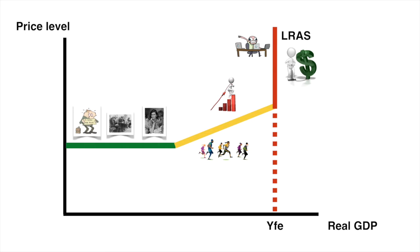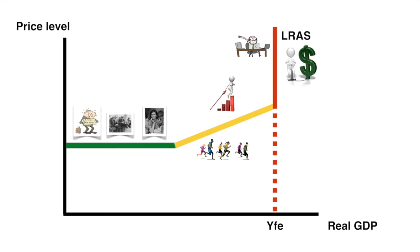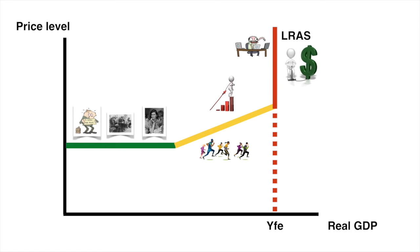As it stands, YFE is our potential output. The current economy is not capable of producing more output beyond this point. However, there are certain factors that could cause it to shift outwards. The LRAS will shift outwards when there is an increase in the productive potential of the economy.